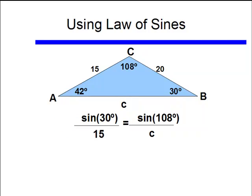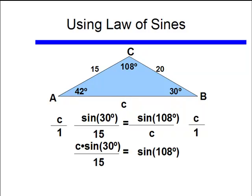To do this, you notice I have C in the denominator, so I'd like it in the numerator, so I'll multiply both sides by C, and I end up with C times sine of 30 degrees divided by 15 is equal to sine of 108.